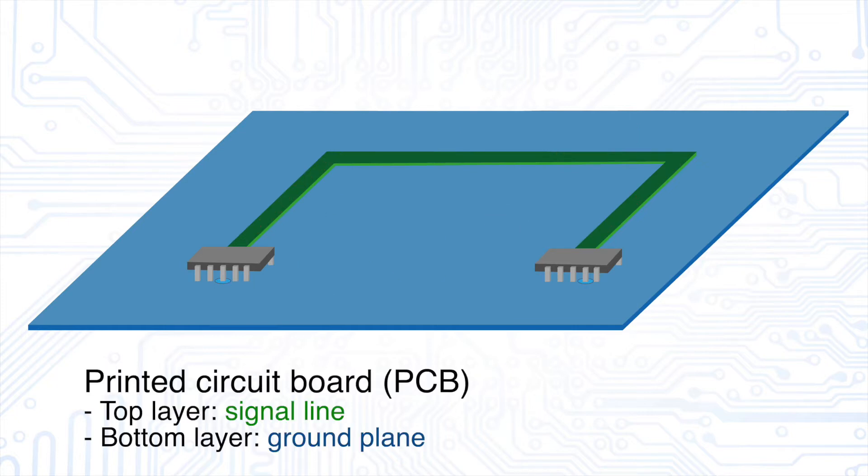On this PCB, you can see two ICs. The green trace on the top is the signal path where the current is flowing from left to right. But how does the current flow back? Does the current flow directly from right to left? Does the current flow back below the green trace? Or does the current flow back again somehow like this?